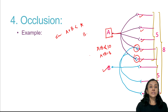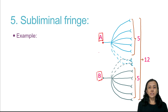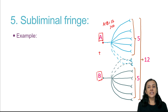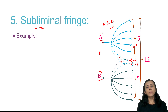Opposite to occlusion is subliminal fringe effect. When stimulating A, five postsynaptic neurons have action potentials and two have sub-threshold stimulation. When B is stimulated, again subliminal stimulation is given to those two. When A and B are stimulated together, these subminimal stimuli are summated and generate action potentials, making A plus B equal to 12 — more than 10. That is subliminal fringe effect.